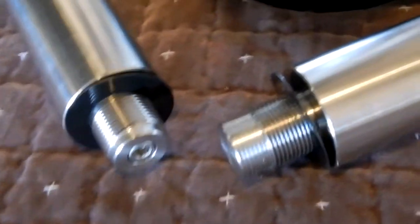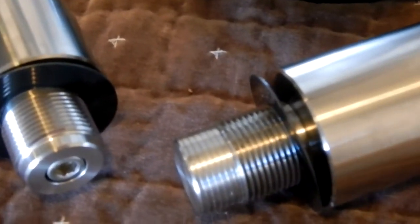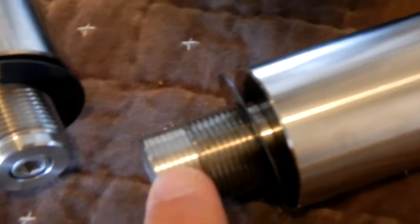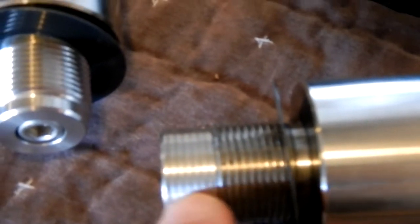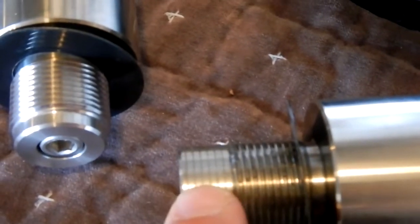Now if we take note of something here, this is the counterweight shaft that came with the Mach 2 and you can see that they have a lead-in. They've machined off the threads.